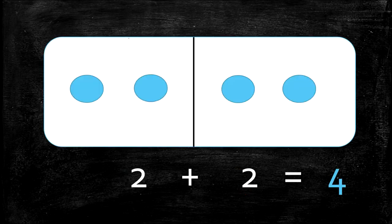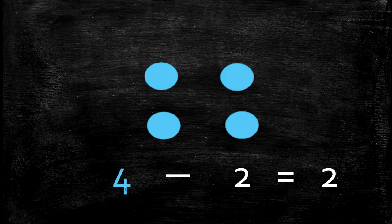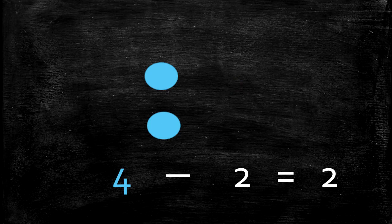Looking at this fact here — this is a double. 2 plus 2 equals 4 altogether. We have 1, 2 in the first box and 1, 2 in the second box, for a total of 1, 2, 3, 4. Now this one doesn't have a matching fact because it's a double — we have this number twice. 2 plus 2 equals 4. And if we flip 2 plus 2, we would have the same addition fact, 2 plus 2. So this is called a double. The subtraction fact is 4 minus 2 equals 2. We have 1, 2, 3, 4, and we're going to take away 1, 2. How many are we left with? 2. Yes, we're left with 2. So 4 minus 2 equals 2.